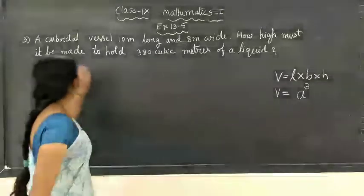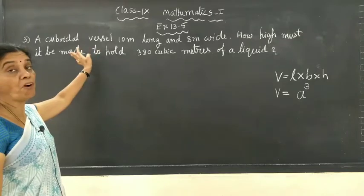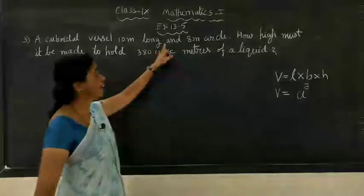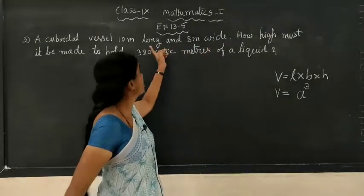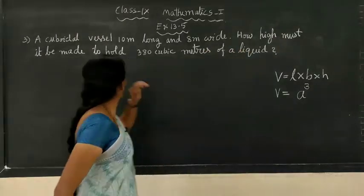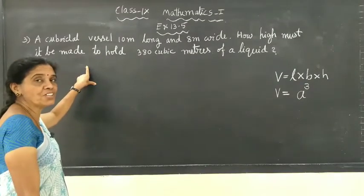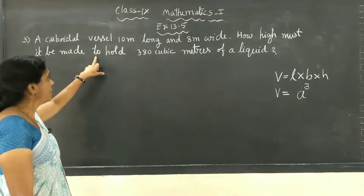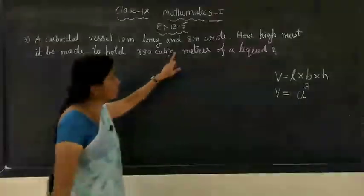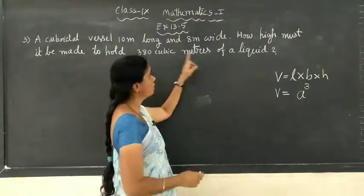What is the third problem? A cuboidal vessel — the vessel is of the shape of a cuboid — is 10 meters long and 8 meters wide. So length is 10 meters and breadth is 8 meters. How high must it be made? Instead of writing 'meter cube,' they have written in words 'cubic meter.'